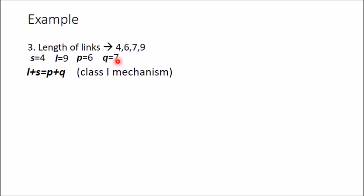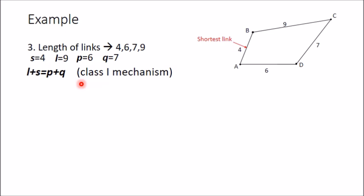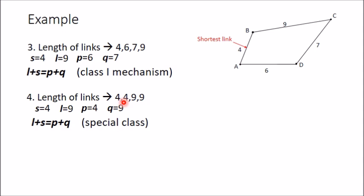Example 3: link lengths are 4, 6, 7, and 9. Smallest is 4, largest is 9, intermediate links are 6 and 7. Here L plus S equals P plus Q (4 + 9 = 13 = 6 + 7). This is similar to a Class 1 mechanism: if one end of the shortest link is fixed, you get crank-rocker; if both ends are fixed, you get crank-crank; if neither end is fixed, you get rocker-rocker.